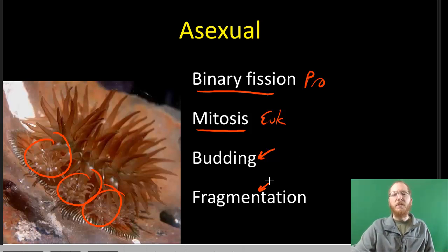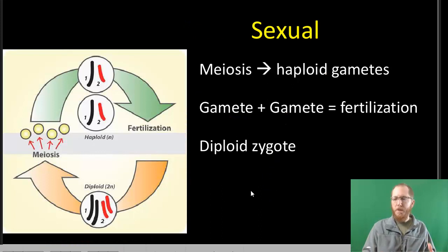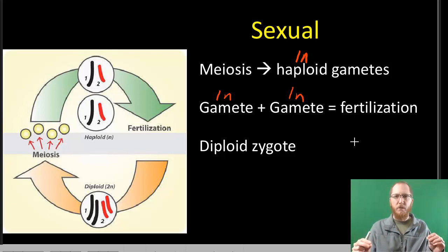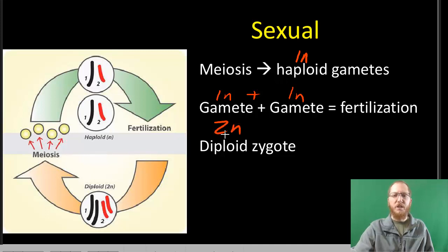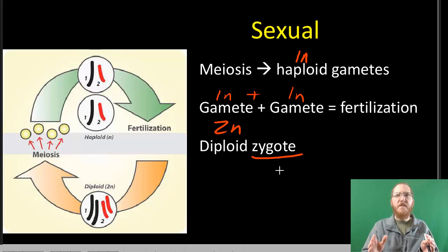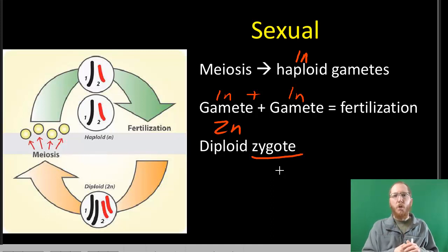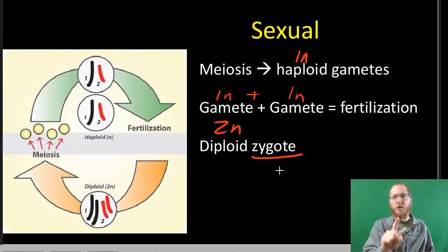Some multicellular animals and plants also use asexual reproduction. For sexual reproduction, the goal is to go through meiosis, which produces haploid 1N gametes. Those gametes meet up — typically one is sperm and one is the ovum or egg — and they undergo fertilization, going from 1N plus 1N to a diploid zygote. A zygote is the very first cell of an organism. In multicellular organisms like us, that one cell did a lot of mitosis to ultimately produce you — around 100 trillion cells from that one original zygote.